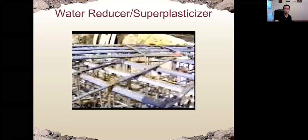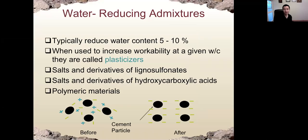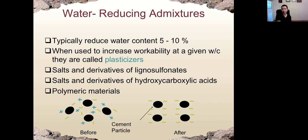By its name, a water reducer can reduce the water content — depending on the type, by five to more than 20 percent. By reducing water content, we reduce the water-to-cement ratio. As a result, the strength of concrete will increase. If the goal is not to reduce water content but to maintain workability, by introducing a water reducer we can increase workability and make the concrete more flowable — in that case we call it a plasticizer. Most water reducers are organic materials such as salts of lignosulfonate, hydroxycarboxylic acid, or some polymeric materials.